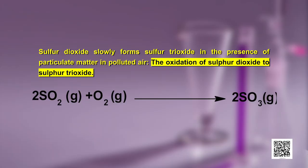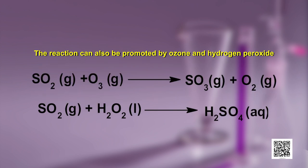Sulphur dioxide slowly forms sulphur trioxide in the presence of particulate matter in polluted air — SO2 is oxidized to SO3. The reaction can also be promoted by ozone and hydrogen peroxide: SO2 + O3 → SO3 + O2, or SO2 + H2O2 → H2SO4 (sulphuric acid).